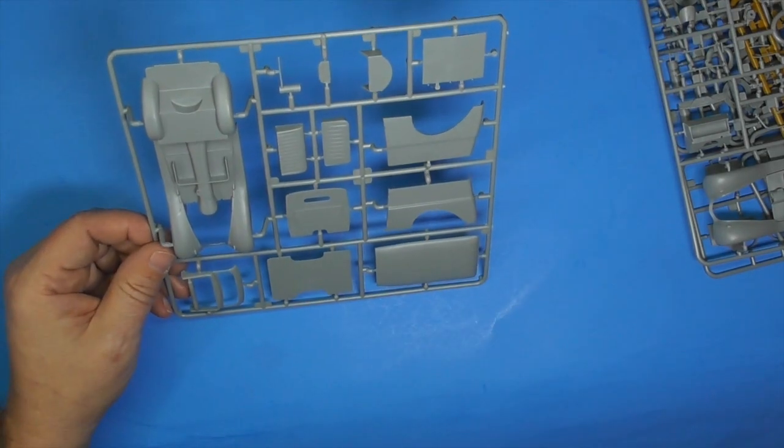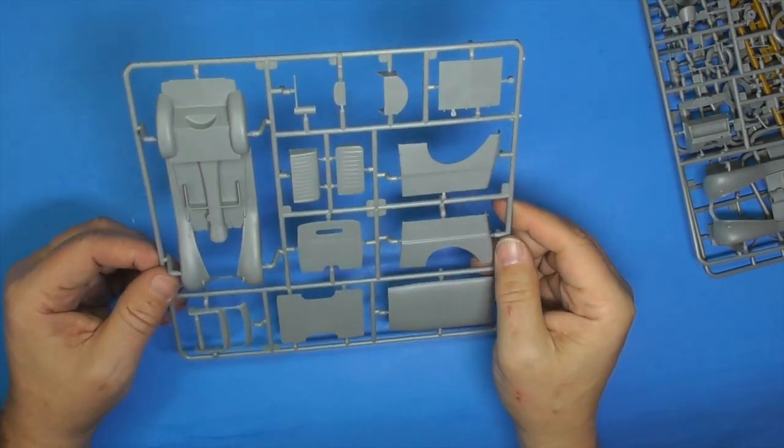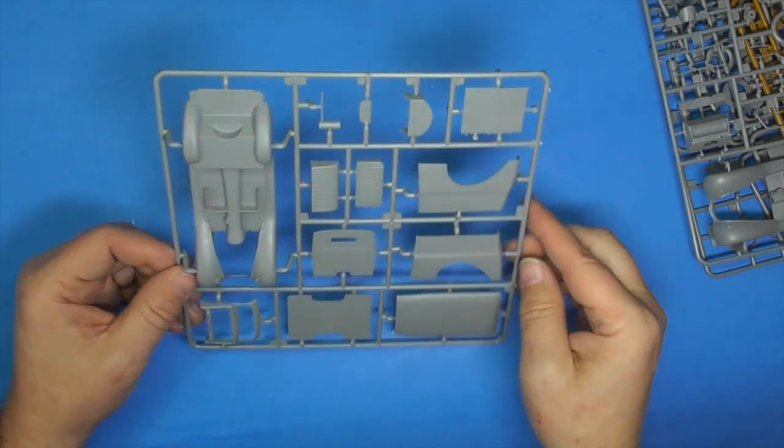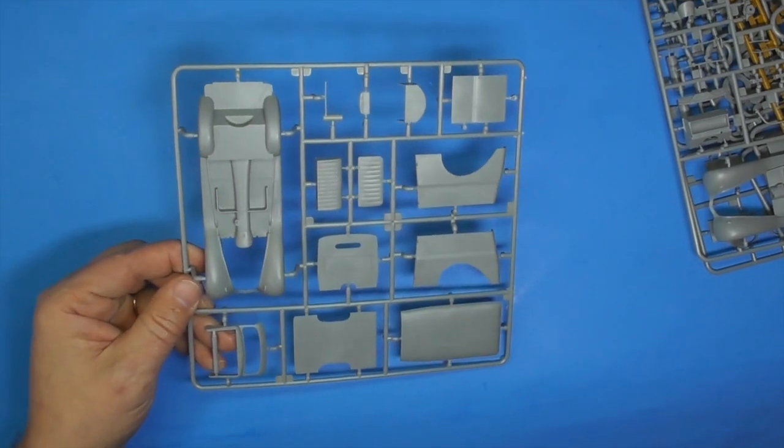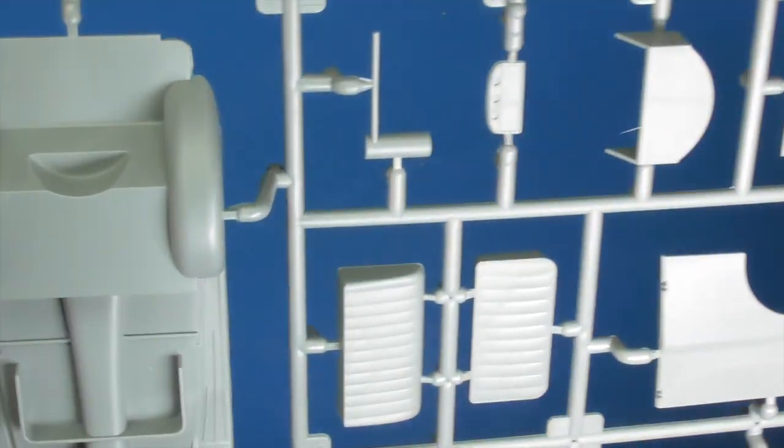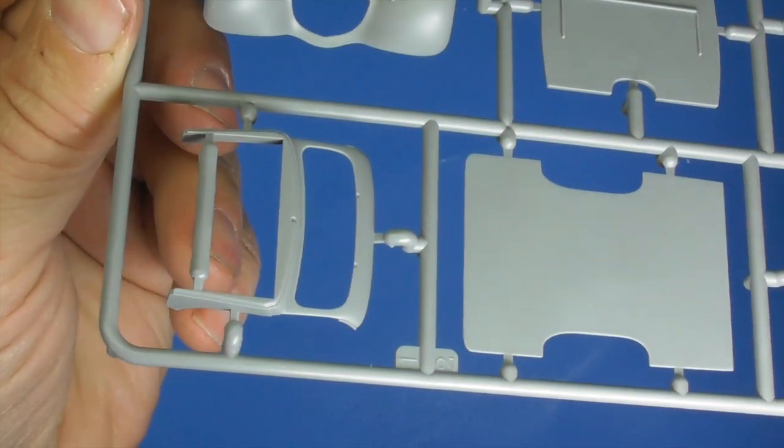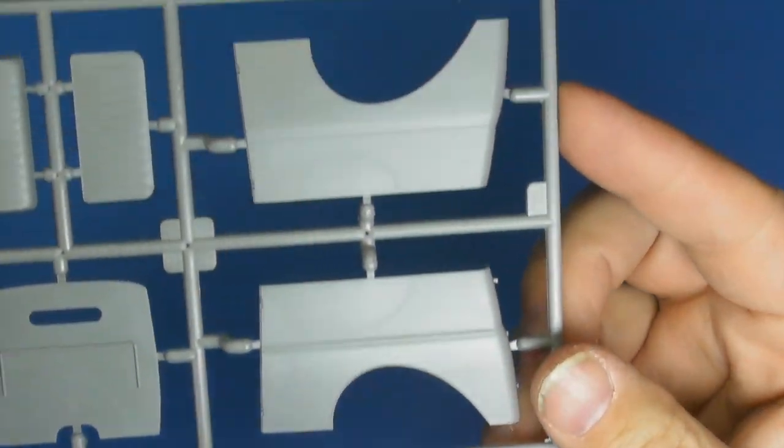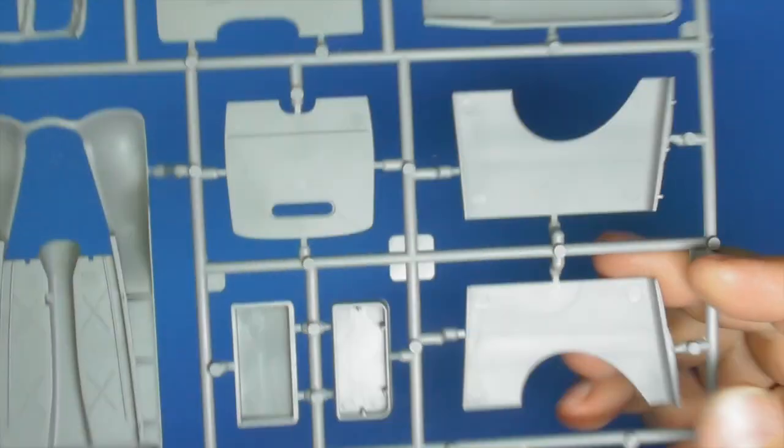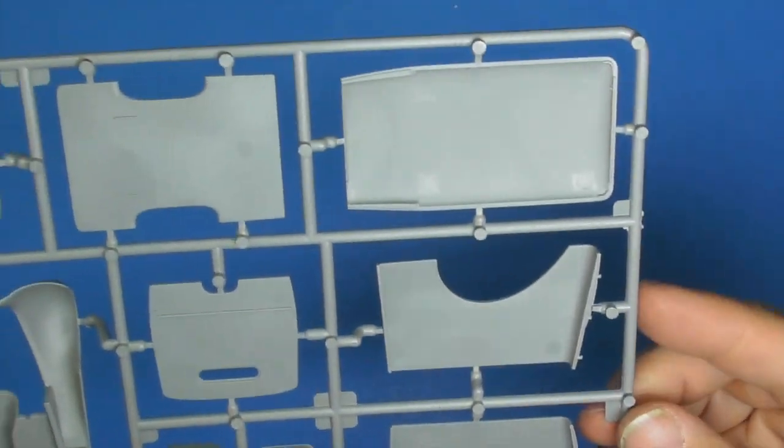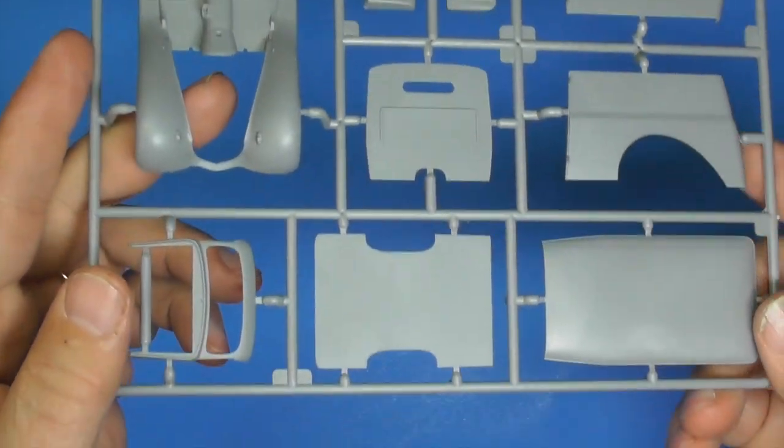So when we put it together, we'll have to see how much is actually going to be seen. I think this is the instrument panel, I think. I'm not 100% sure, but I think. But it is good looking plastic. It is in 35th scale. Remember that, this isn't your normal 24th, 25th scale car. This is designed to go along with World War II, not World War I, World War II dioramas.